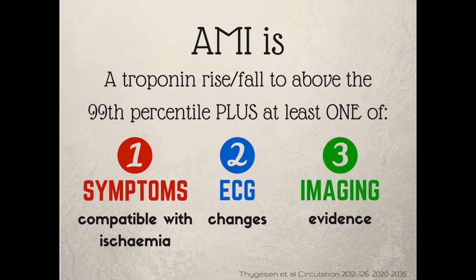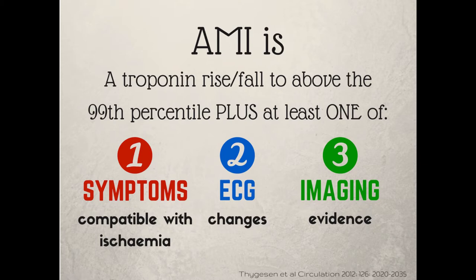But there's another really important thing about this universal definition: the troponin rise or fall isn't enough to diagnose acute myocardial infarction by itself. You also need one of three other things. You need either symptoms compatible with myocardial ischemia — they don't need to be typical, just compatible — or you need ECG changes, which could be ST segment deviation, T wave inversion, or new Q waves. Or you need some imaging evidence of an acute myocardial infarction, such as loss of viable myocardium that's new on an echo.